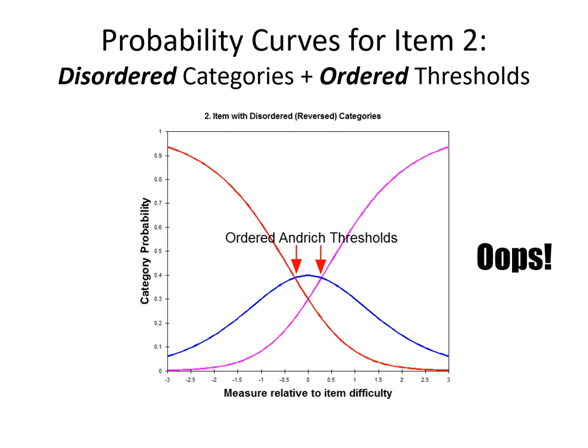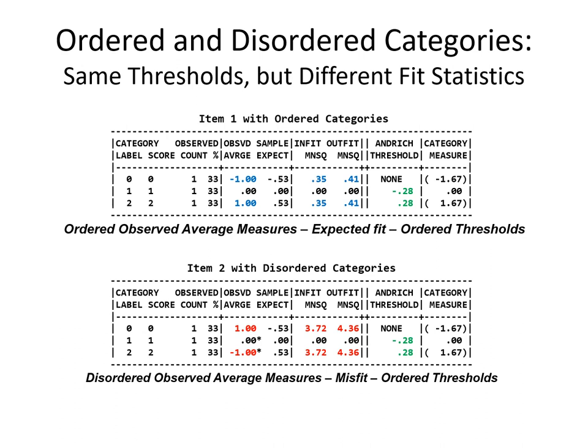When we summarize the FIT statistics and other details for each of the two items, we see each item has three observations — a zero, one, and two. The observed average is what we expected because of the three people we chose. The big differences are the FIT statistics and the fact that the observed averages are disordered. So it's not the Andridge thresholds that are disordered — it's the observed averages that are disordered, and the FIT is worse.